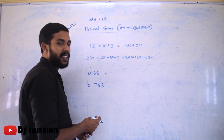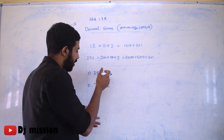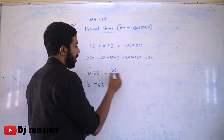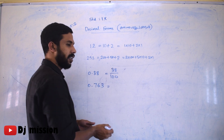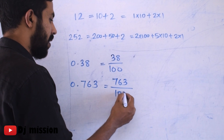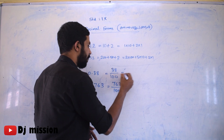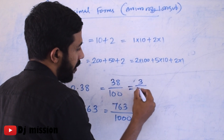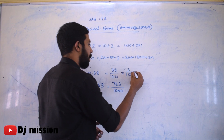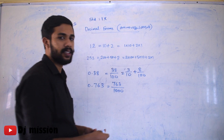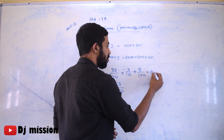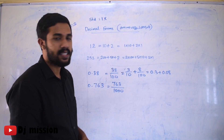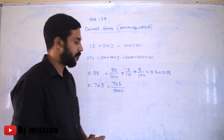So I think the fractional form — 0.38 is 38 by 100. And 0.763 is a small number. 38 by 100 — because 3 by 10 plus 8 by 100 — that is 0.3 plus 0.08, which gives us 38 by 100. Okay, so the end result is 38 by 100.